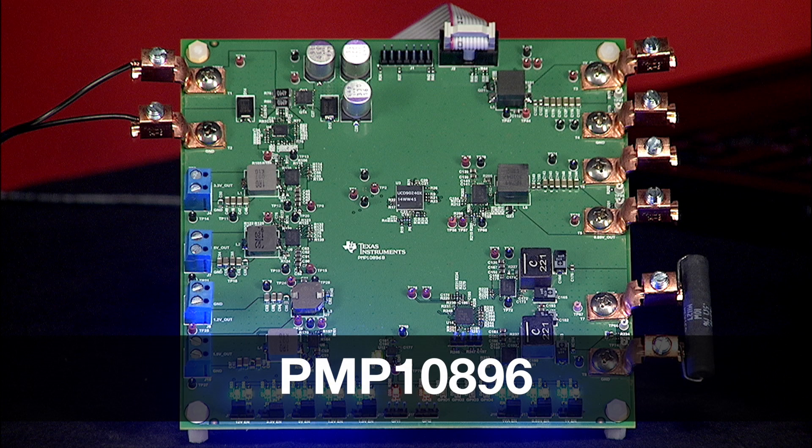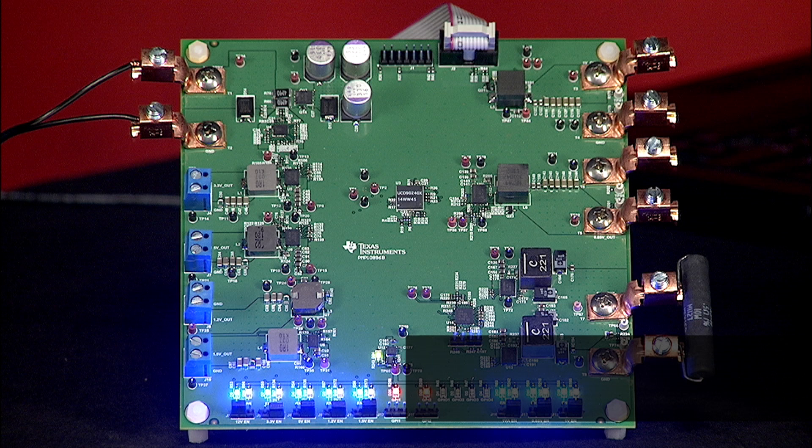TI Design PMP10896 features the TPS544C25 and is a complete power system, including the new digital sequencer, the UCD90240. The design is ideal for communications applications using PMBUS, such as enterprise switch or small cell base stations, and the design files are downloadable on our website.